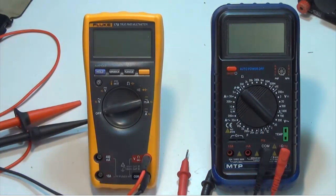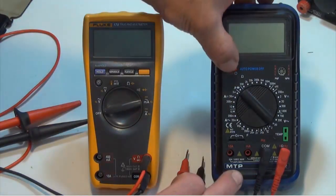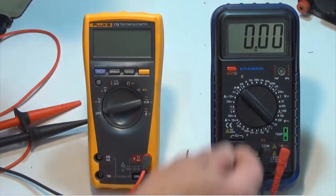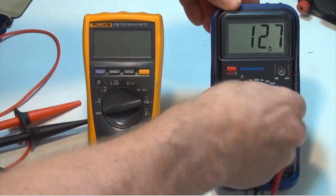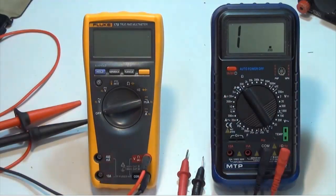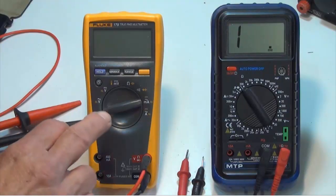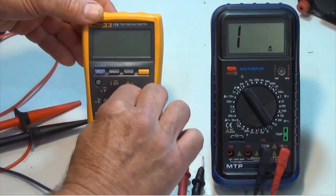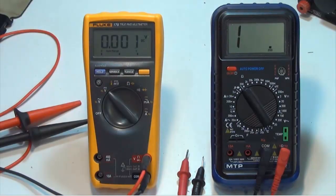So let's turn on the MTP meter here, and I'm going to set it to one of the resistance ranges. Let's just start off at the 200 ohm range. I have a Fluke meter here, it's auto-ranging, so I'm going to turn it on and set it to measure DC volts.